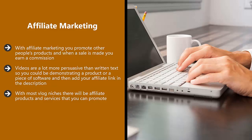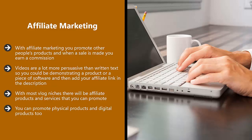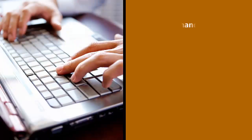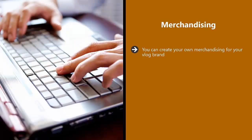With most vlog niches there will be affiliate products and services you can promote. Use Google or another search engine and type in the type of product or service followed by 'affiliate program' — for example, 'makeup affiliate program.' You can promote physical products and digital products too. Digital products are normally software, how-to guides, or training videos. It can be harder to make a sale with digital products, but the commissions are usually a lot higher than with physical products.